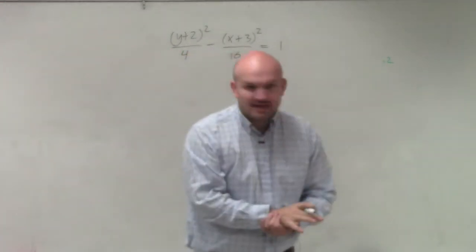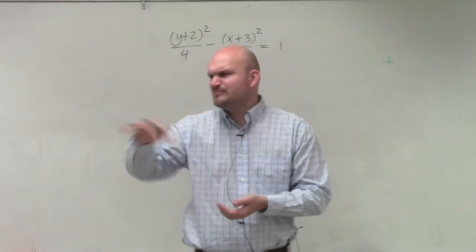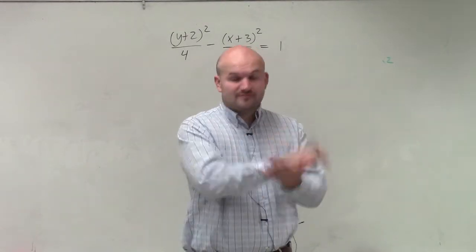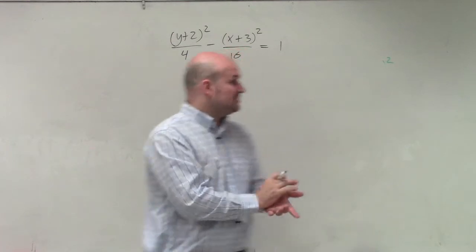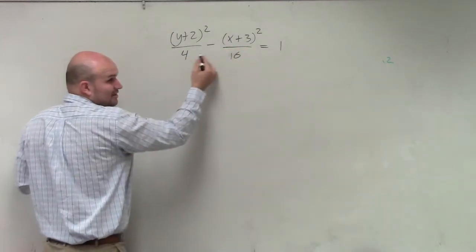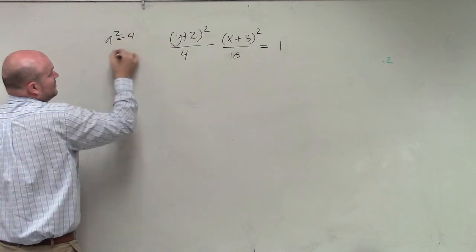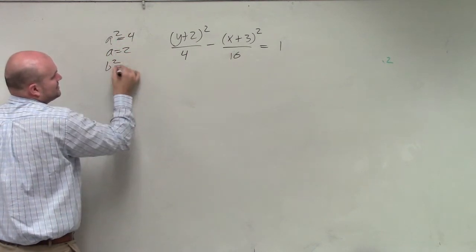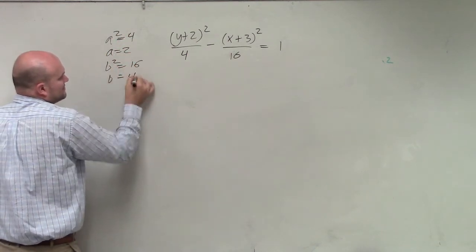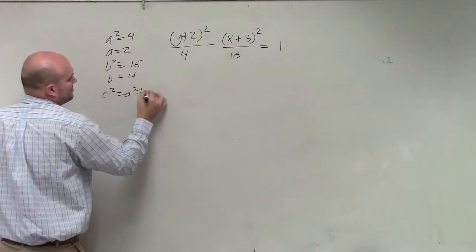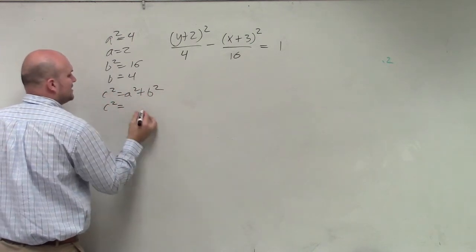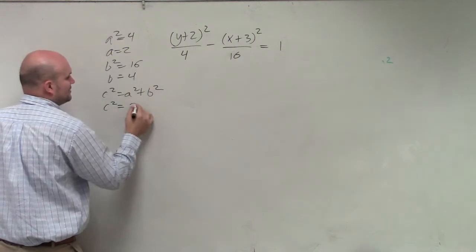So first thing I want to do is identify my a, just flip that over. We're actually not using that right now. Identify your a squared, identify your b squared. Hyperbola, a squared minus b squared, right? a squared equals 4, a equals 2. b squared equals 16, b equals 4. c squared equals a squared plus b squared. c squared equals a squared plus b squared equals 20.